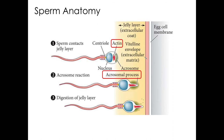The acrosomal process is not only important for helping the sperm to digest a path through the outer coatings of the egg, but it also contains a newly exposed membrane. That newly exposed membrane has proteins that, as we'll see later, help the sperm to attach to the egg.